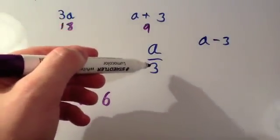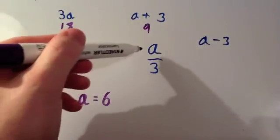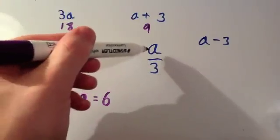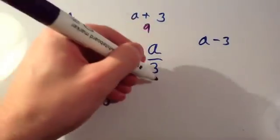We're going to do a divided by 3. Well, a is 6. So we're going to do 6 divided by 3. 6 divided by 3 is 2.